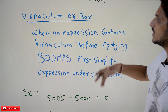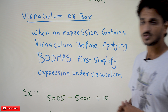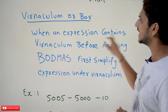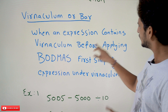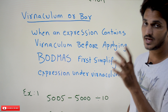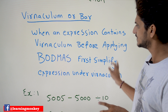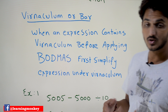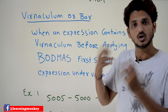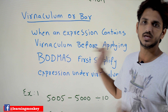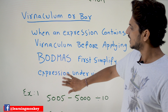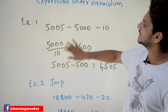One more point to understand: in expressions we may have a vinculum bar over part of the expression. When an expression contains a vinculum, before applying BODMAS rules, first simplify the expression under the vinculum. We have to evaluate the expression under the vinculum first, then apply BODMAS rules. We'll do examples both with and without the vinculum.